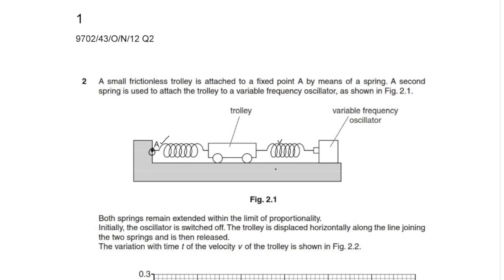In this question, they mention that a small frictionless trolley is attached to a fixed point A by means of a spring. A second spring is used to attach the trolley to a variable frequency oscillator. Both springs remain extended within the limit of proportionality.